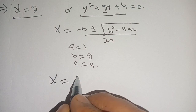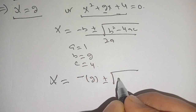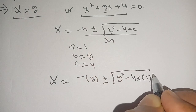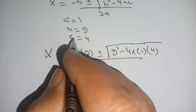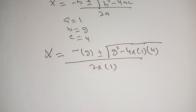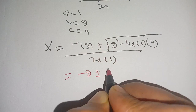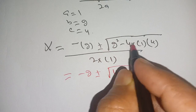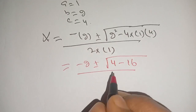Substituting the values of a, b, and c, we get x equals minus 2 plus or minus square root of (2 squared minus 4 times 1 times 4) divided by 2 times 1. Solving this we get minus 2 plus or minus square root of (4 minus 16) divided by 2.